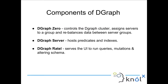DGraph Ratel serves the UI to run queries, mutations, and altering schema. DGraph Ratel is a tool that DGraph provides so that we can see the UI of the database. Using the UI we can run queries, see the schema and alter it. Alter means changing anything in the schema, and adding or deleting data from DGraph is called mutation. DGraph Ratel is not required by DGraph to run, but it really helps while beginning so that you can hit your queries directly on DGraph.